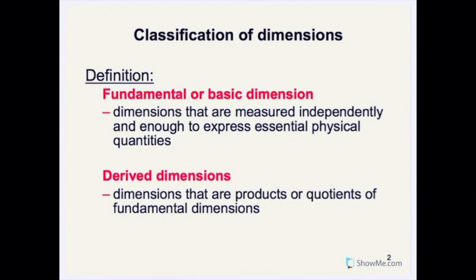Dimensions can be classified into two categories. The first is the fundamental or basic dimension, and the second is the derived dimension. Fundamental or basic dimension is dimensions that are measured independently and enough to express essential physical quantities.